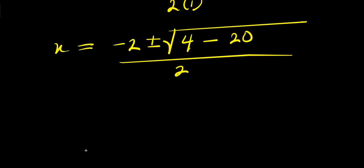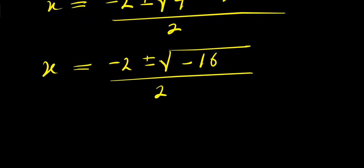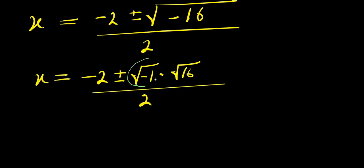From here, we have x equals negative 2 plus or minus square root of 4 minus 20, that is negative 16, divided by 2. I can factor this out, so x equals negative 2 plus or minus square root of negative 1 times square root of 16, divided by 2. From here, x equals negative 2 plus or minus i times square root of 16, divided by 2.